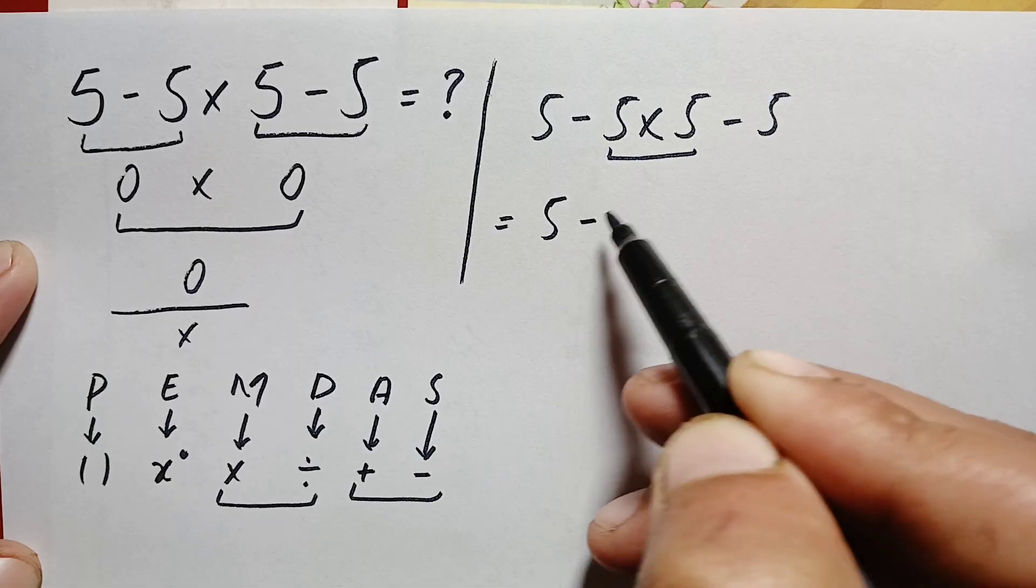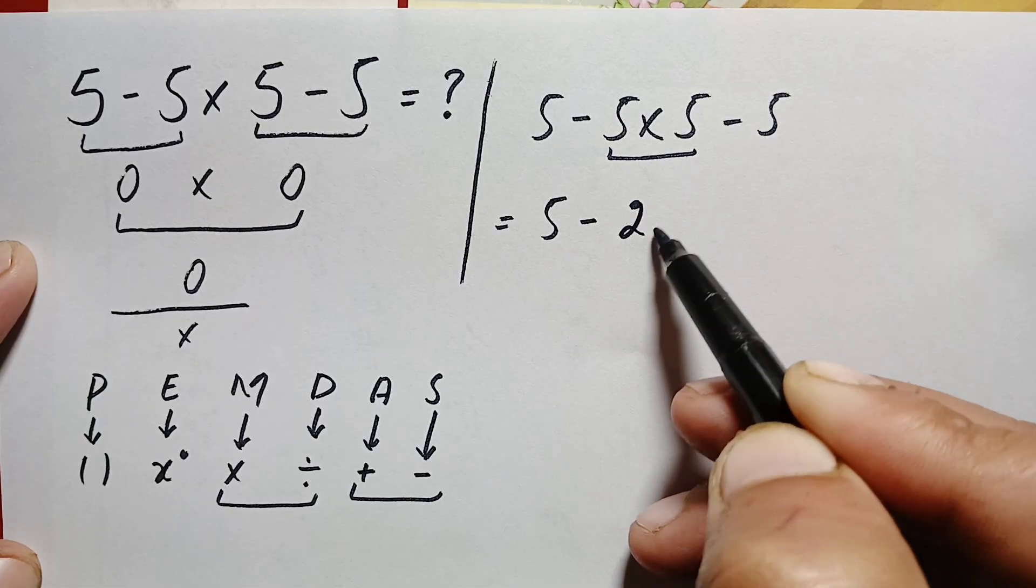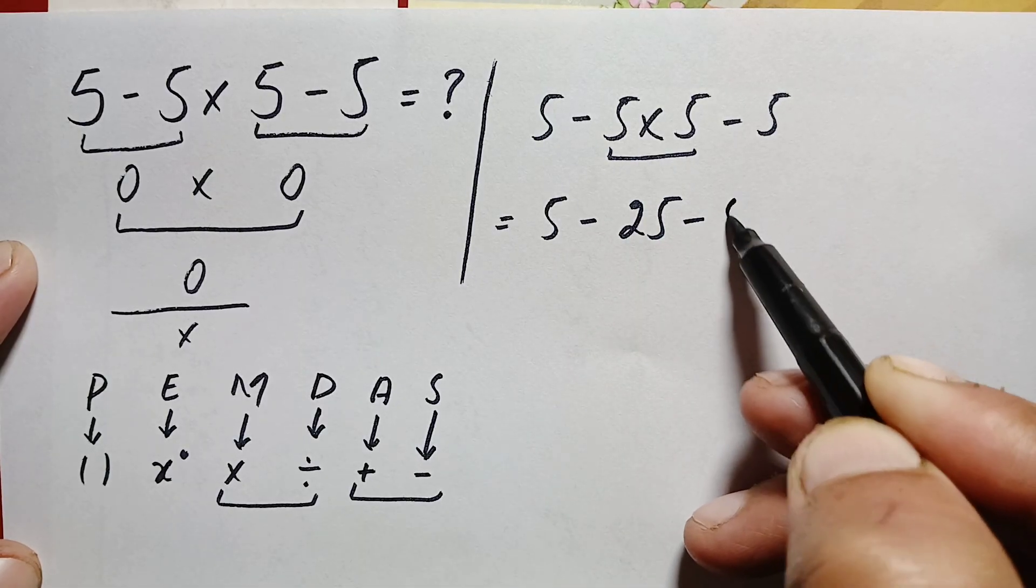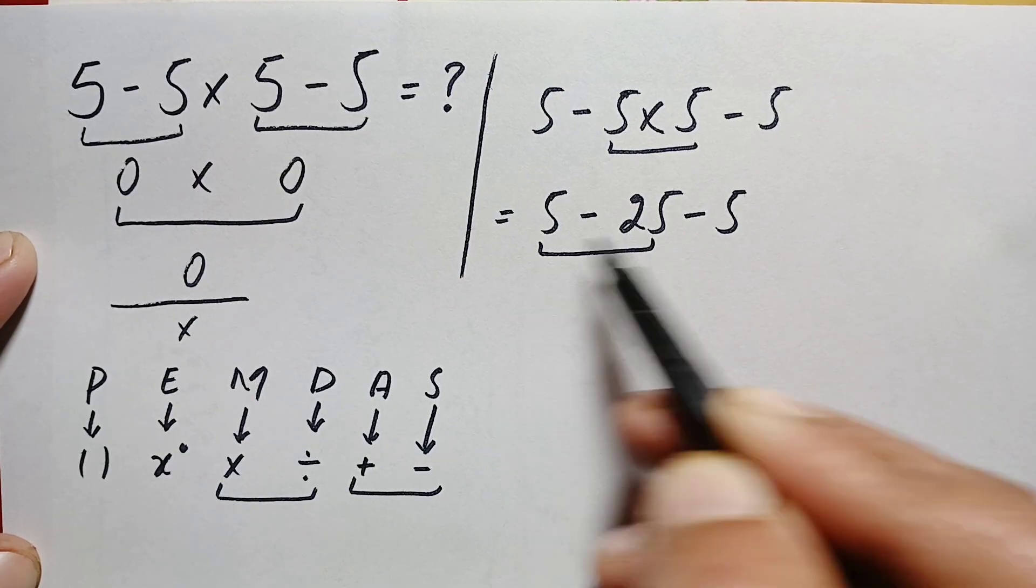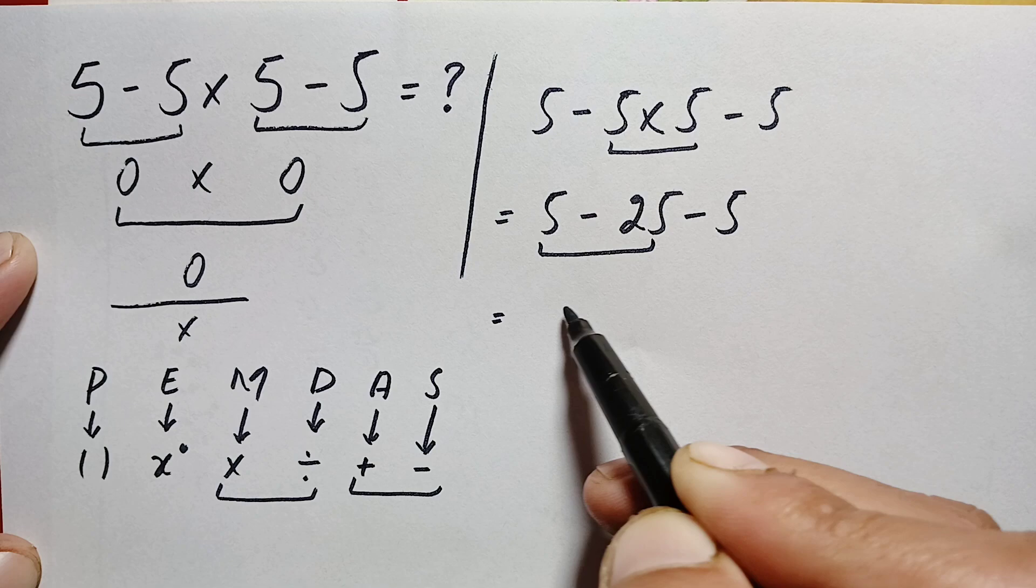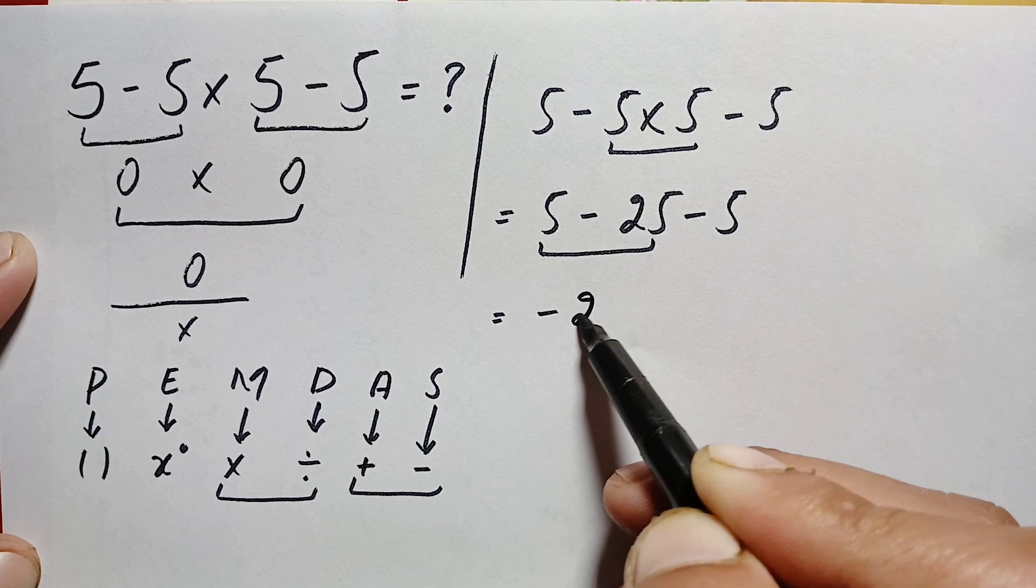This is 5 minus 5 times 5 is 25 minus 5. Here we have two subtractions, so first we will do this one subtraction on the left side. 5 minus 25 is simply minus 20.